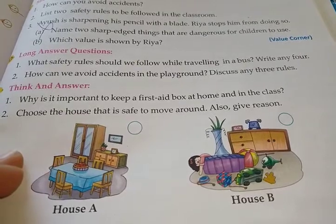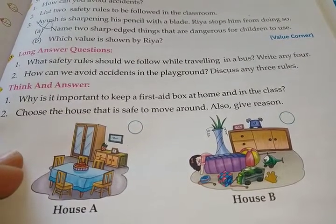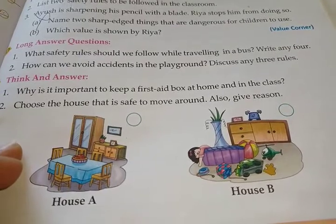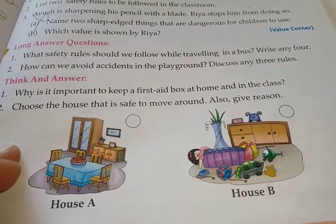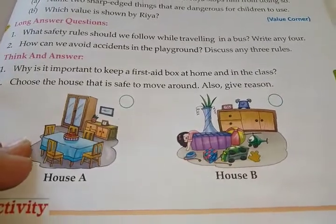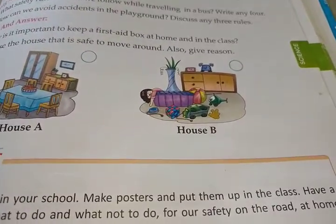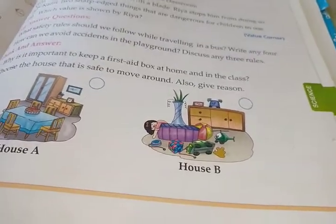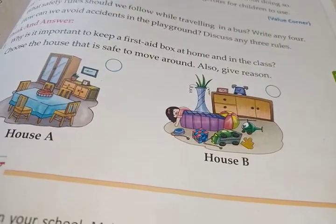Choose the house that is safe to move around in and give a reason: House A or House B? House A, because all the pictures are in the right place. So here is lesson number 2: Keeping Safe.